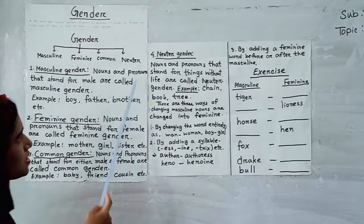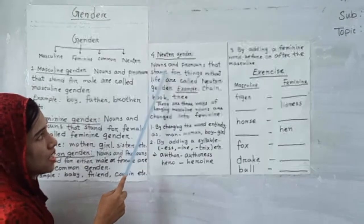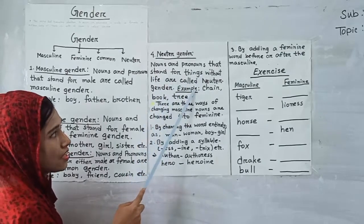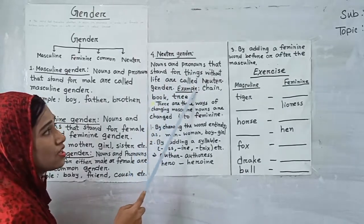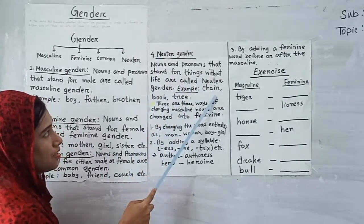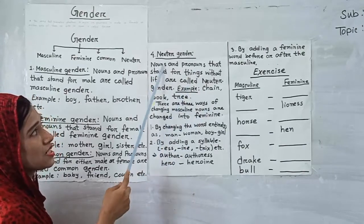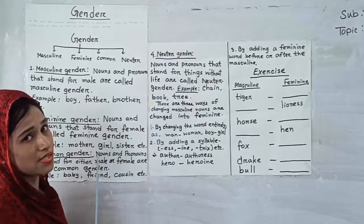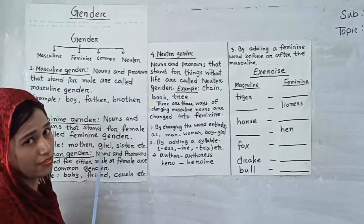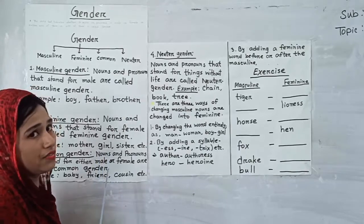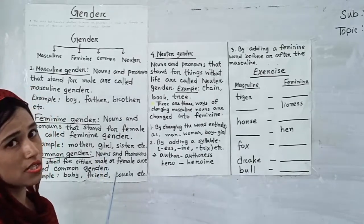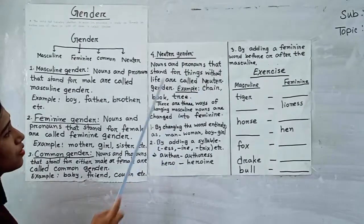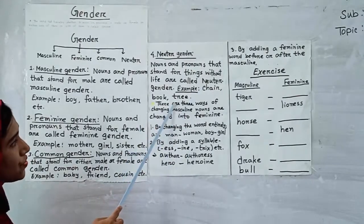Number 4, neuter gender. Nouns and pronouns that stand for things without life are called neuter gender. That means neuter gender refers to those types of words which have no life — non-living things are called neuter gender. For example, chair, book, table, etc.